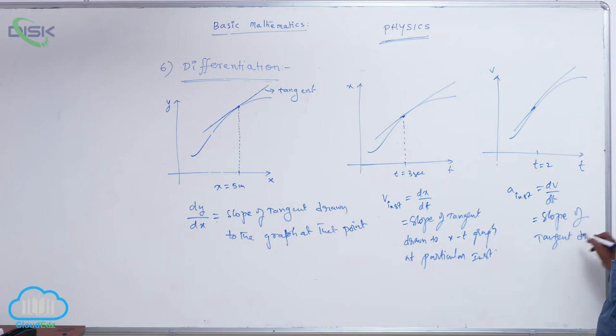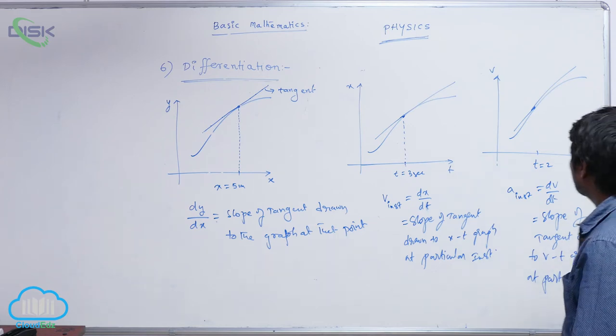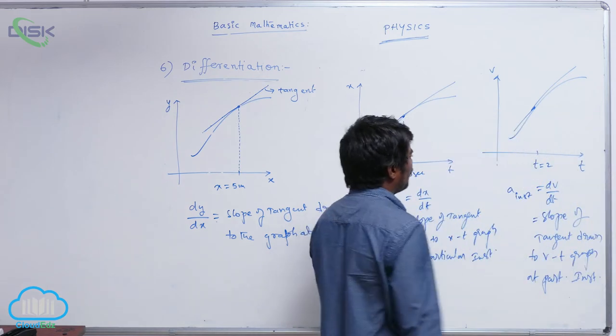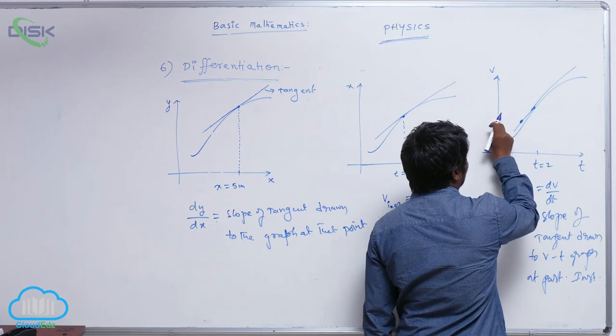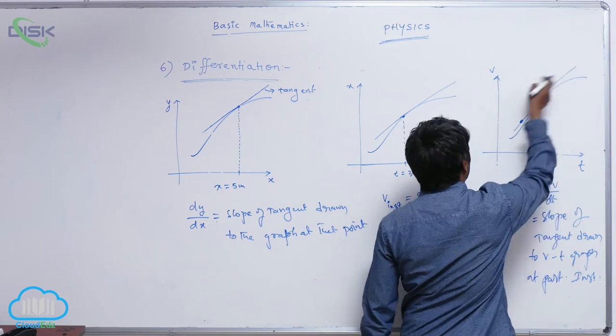at particular instant drawn to v-t graph at particular instant. So you can select any two points here, one point is for t1 v1, another point is for t2 v2.